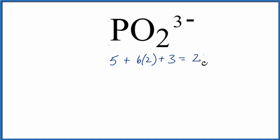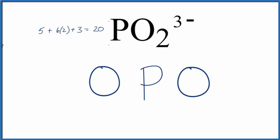We'll put the phosphorus at the center of our Lewis structure, and then two oxygens around it. Next, we'll put a pair of electrons between atoms to form a chemical bond.